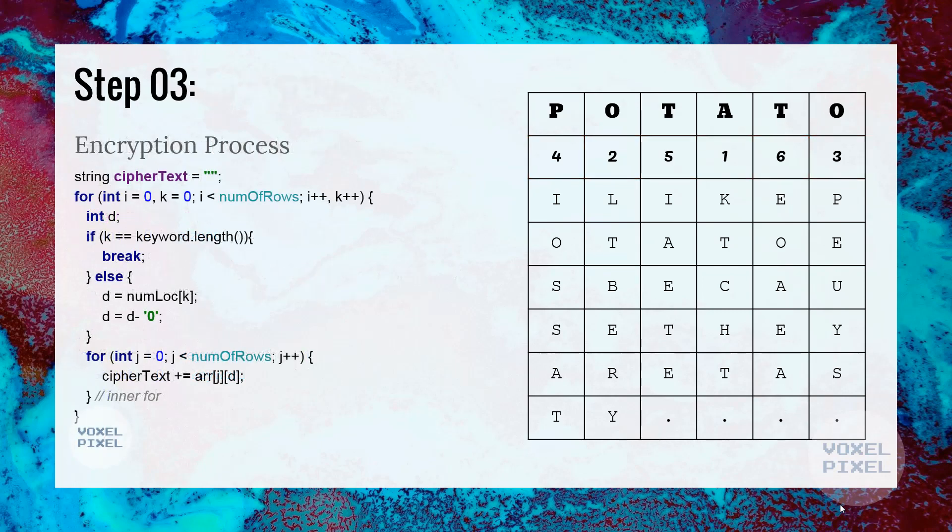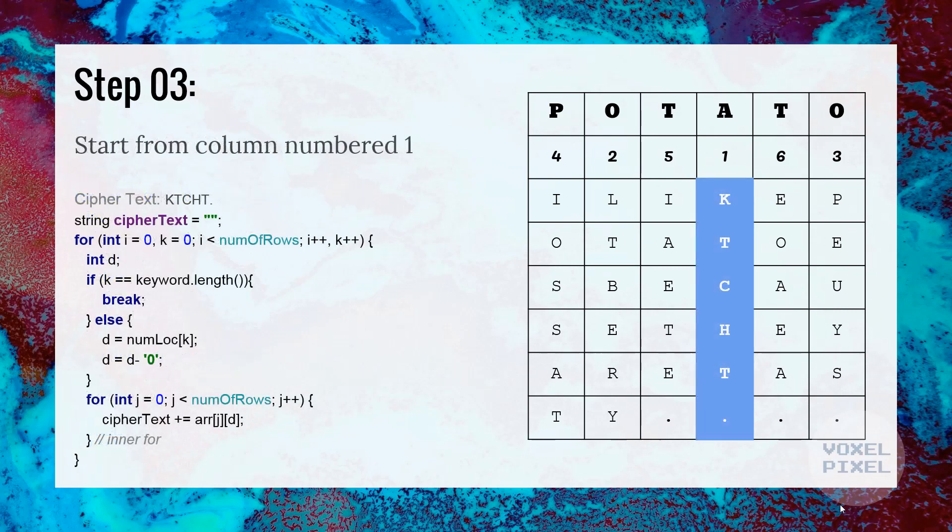The encryption process will begin by taking each letter from the column, starting from column number 1. Here, the letters are K, T, C, H, T and dot.